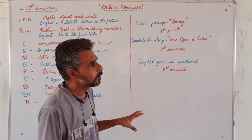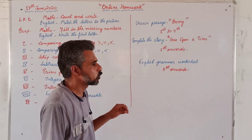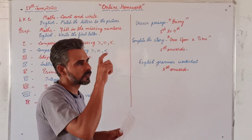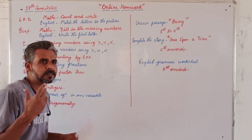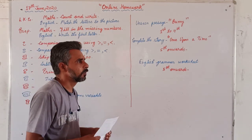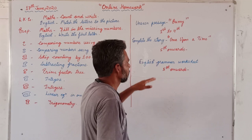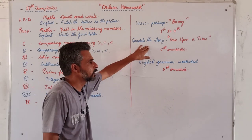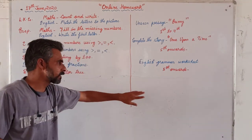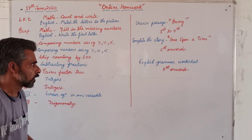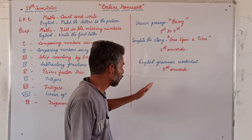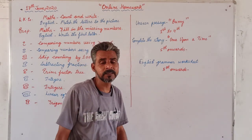For the higher classes we are providing a 'complete the story' worksheet. A story is given with blank words, and the options are provided in a box. You select the correct words and complete the story. This worksheet is for class 5, 6, 7, and 8. One more worksheet on English grammar is also provided for classes 4, 6, 7, and 8.